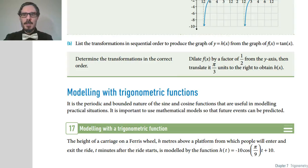So let's try an example of modeling with trig. The height of a carriage on a ferris wheel, h meters above a platform, t minutes after the ride starts, is modeled by this function. The height is -10cos(π/9 t) + 10. That there's a π here is a hint we're working in radians.